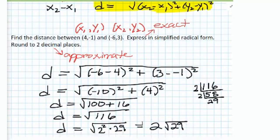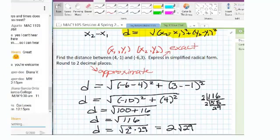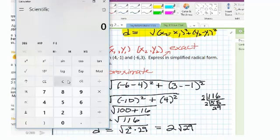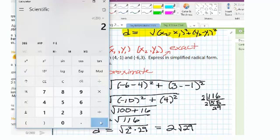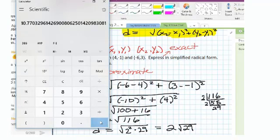This is the exact solution, two square roots of 29. And we also want an approximation. So I'm going to open up my calculator here. I'm going to take the square root of 29 and multiply that by two, or you can just take the square root of 116, doesn't matter. And we're going to get 10.77.